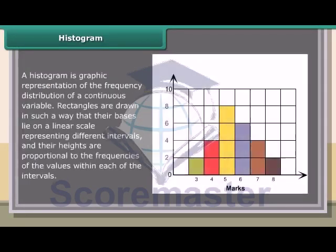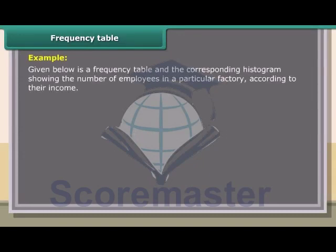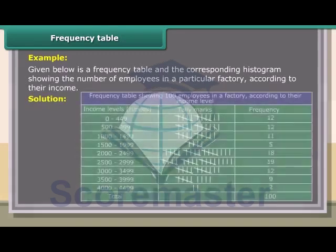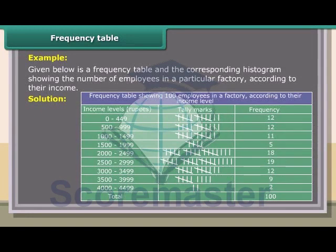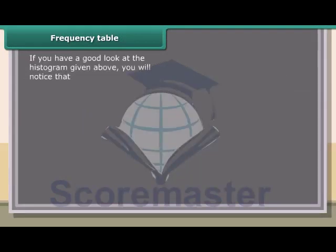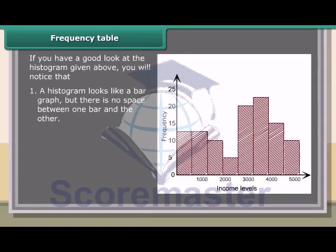A histogram is a graphic representation of the frequency distribution of a continuous variable. Rectangles are drawn such that their bases lie on a linear scale representing different intervals and their heights are proportional to the frequency of the values within each interval. Given below is a frequency table and the corresponding histogram showing the number of employees in a factory according to their income. A histogram looks like a bar graph, but there is no space between one bar and the other.